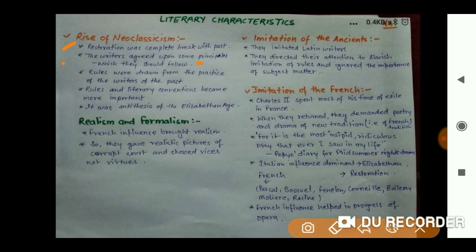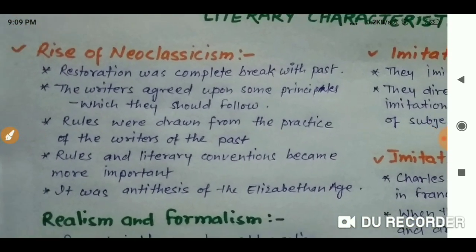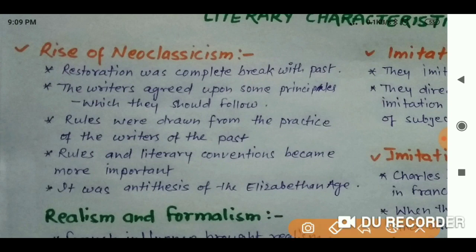Neoclassicism is about following rules and making ideals to follow. Some writers followed rules drawn from the practice of writers of the past. Rules and important literary conventions became more important than imagination.